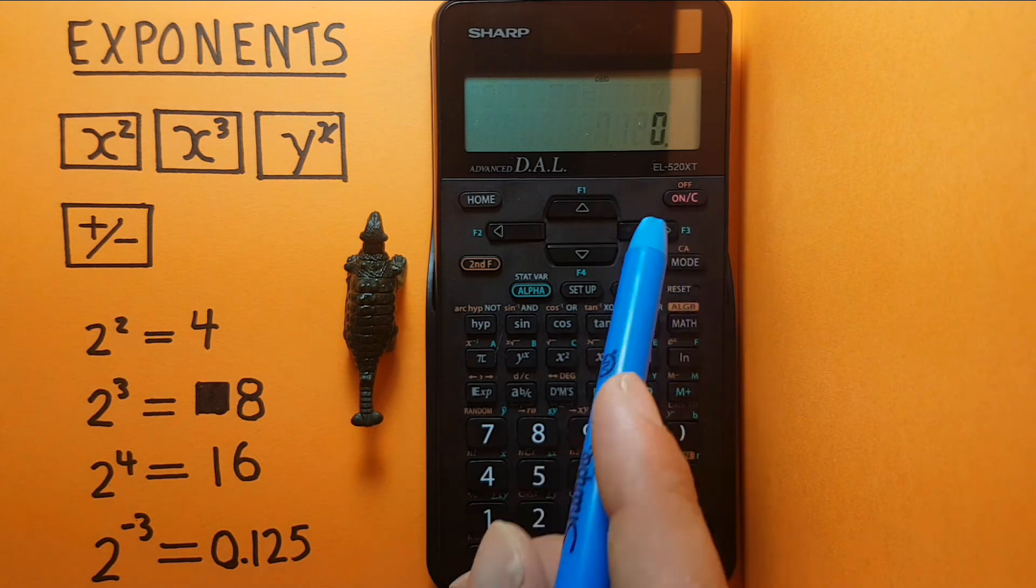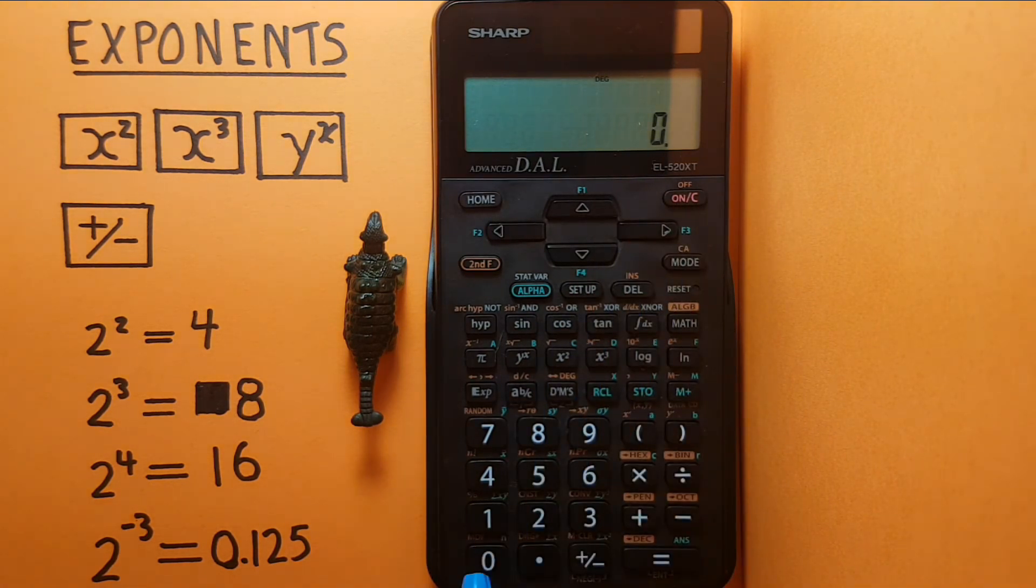Let's try one more. How about 2 to the power of negative 2 equals 0.25.